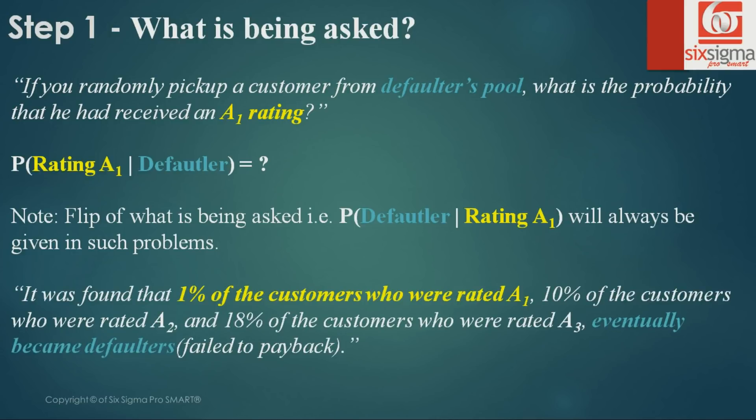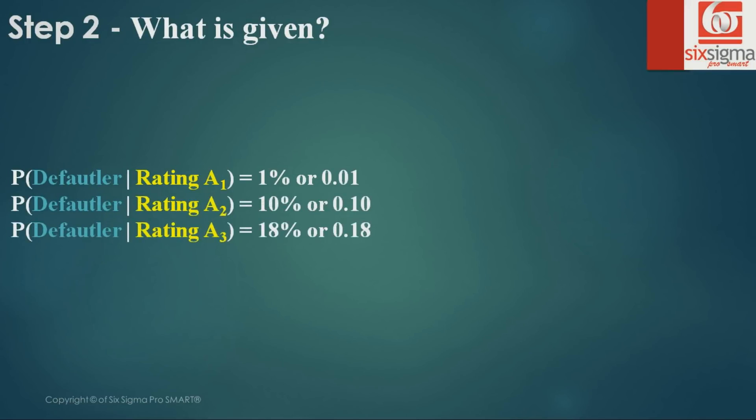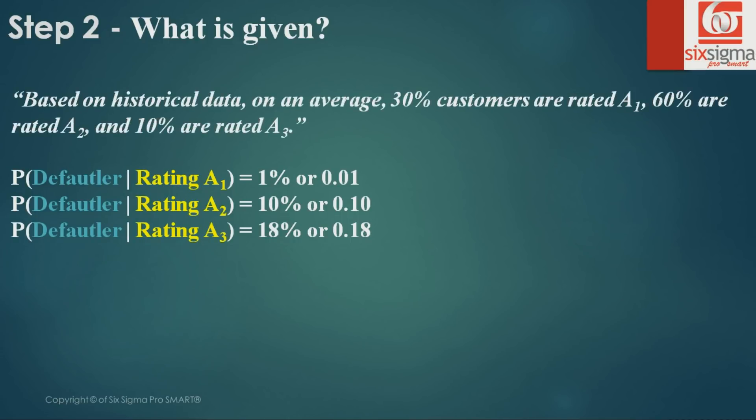If you read the text, it says 1% of the customers who were rated A1 eventually became defaulters. Not only do you know it for A1, you also know it for A2 and A3. This is the conditional probability piece, which is known to us. What else is known to us?